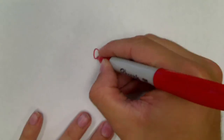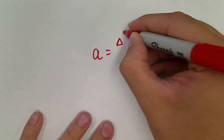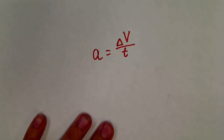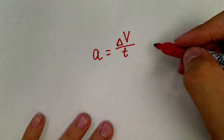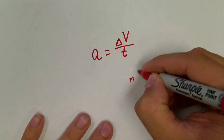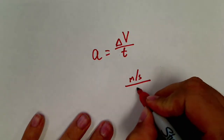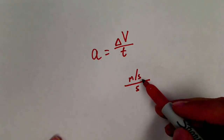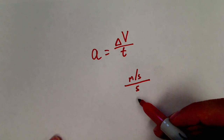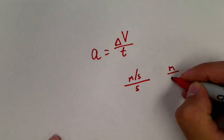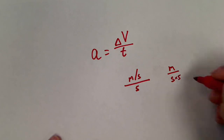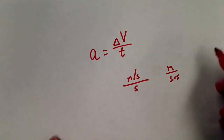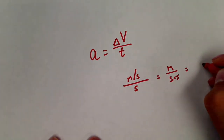Now if we go to another equation, such as acceleration is the change in velocity over time. My units of velocity are meters per second, and my units of time are seconds. So I have meters per second per second — second on the bottom twice. Another way of writing this would be m over s times s, and you can see that this is really meters per second squared.